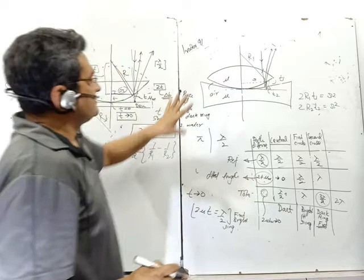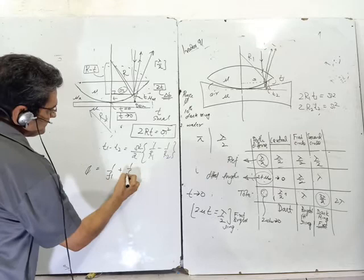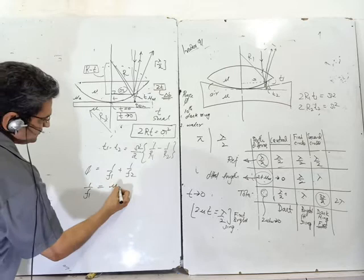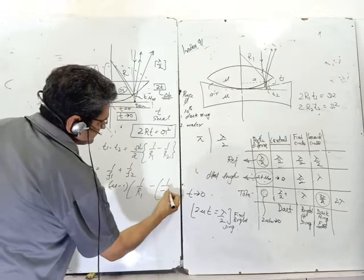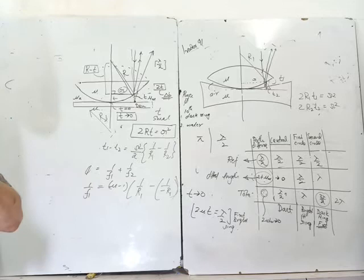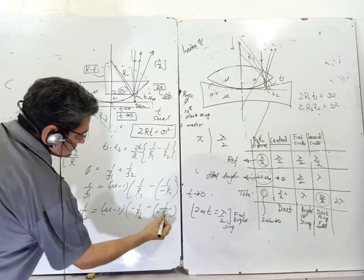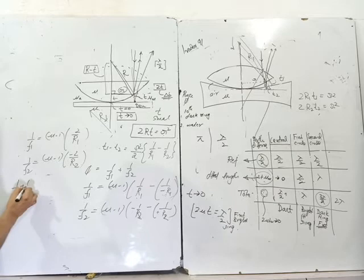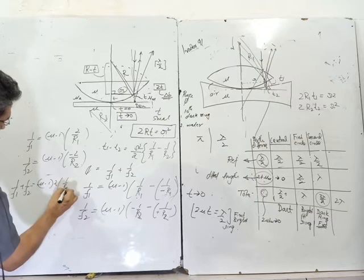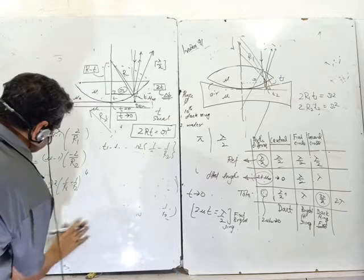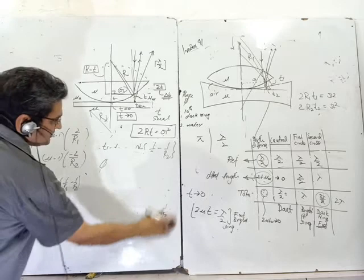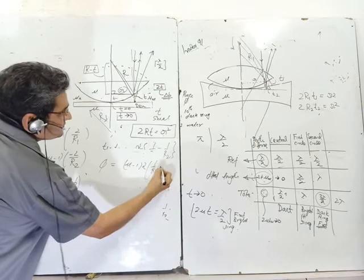The power of the lens combination is given in air. Power P = 1/f₁ + 1/f₂. Using the lensmaker's equation, 1/f₁ + 1/f₂ = (μ−1) × 2 × (1/R₁ − 1/R₂). So the power Φ = (μ−1) × 2 × (1/R₁ − 1/R₂). This gives a direct relationship between the power and the radii of curvature.